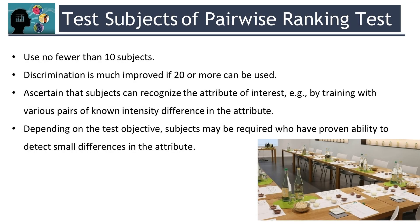For the Pairwise Ranking Test, use no fewer than 10 analysts. Discrimination is much improved if 20 or more can be used.